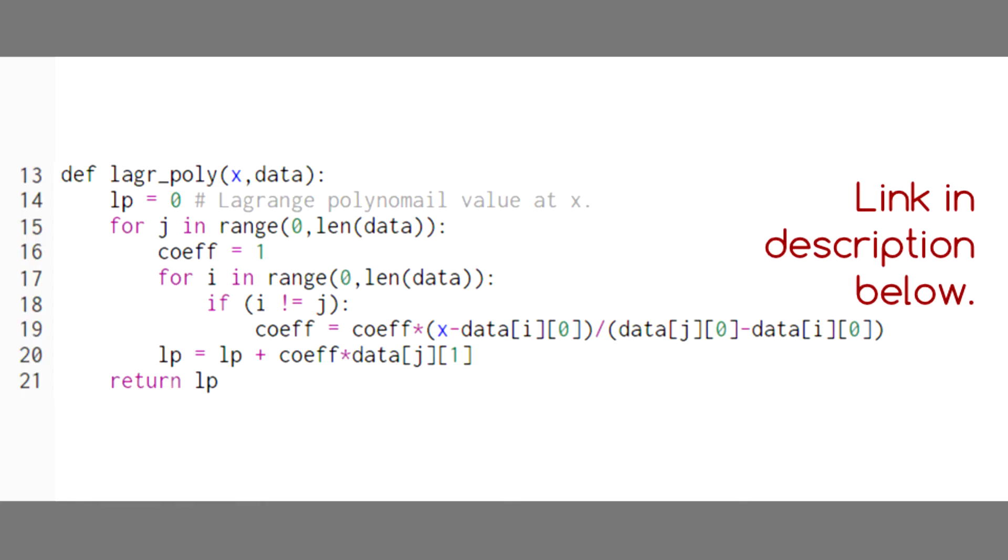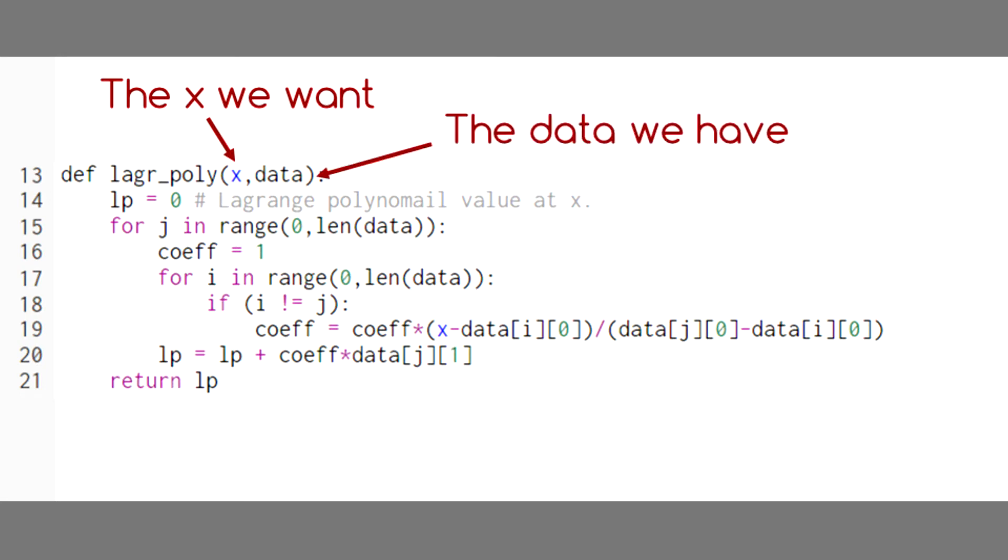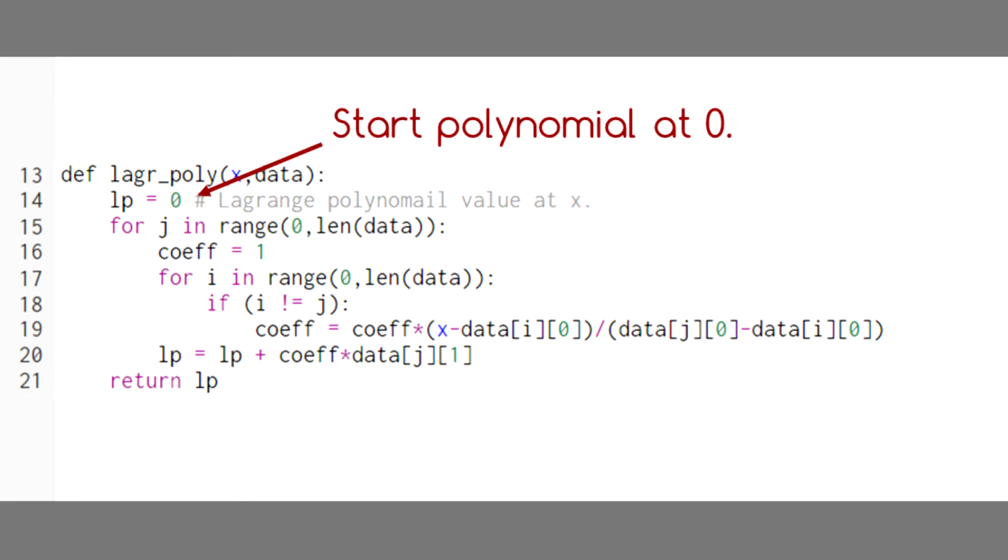In this code, which is available in a link in the description below, we've set up a Lagrange polynomial function that takes in the value of x we're looking at and a list of data points that we've collected. First we initialize the value of our Lagrange polynomial to zero.